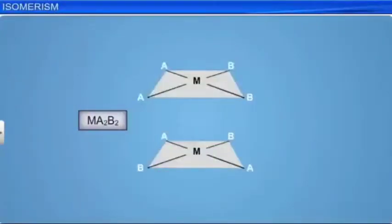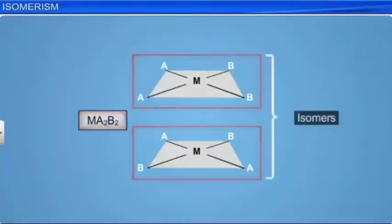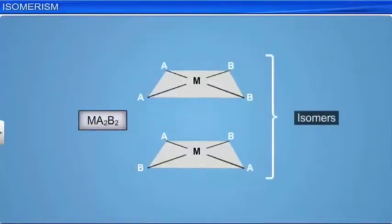Two or more compounds with the same chemical formula but different structural arrangements are called isomers. The phenomenon is known as isomerism. Isomers differ in one or more physical or chemical properties because of the difference in the arrangement of the atoms.